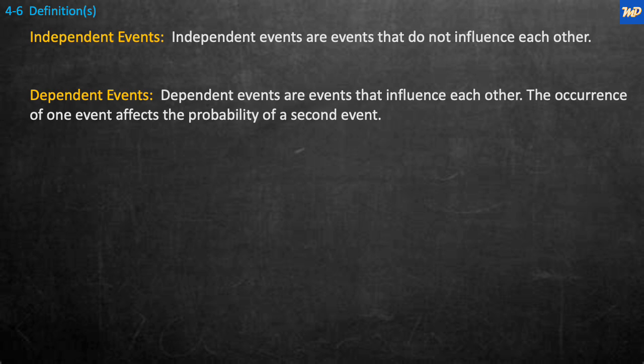Before we get started, I'd like to go over a couple of definitions. First, independent events are events that do not influence one another — you create one event and another, and the two do not interfere with each other. Dependent events are events that influence each other. If doing something causes an event that changes the way the next event happens, that is a dependent event. The occurrence of one event affects the probability of a second event.